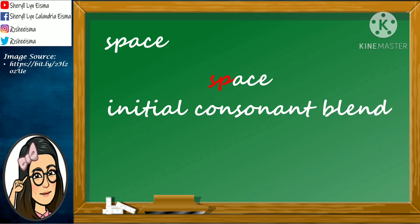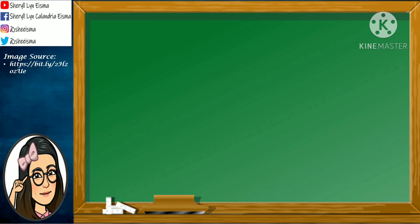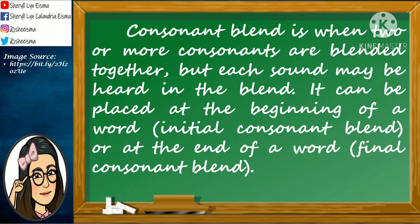Did you get them all right? I hope you did! Always remember that a consonant blend is when two or more consonants are blended together, but each sound may be heard in the blend. It can be placed at the beginning of a word, where we call it an initial consonant blend, or at the end of a word, where we call it a final consonant blend. I hope you enjoyed our lesson for today and learned something from it.